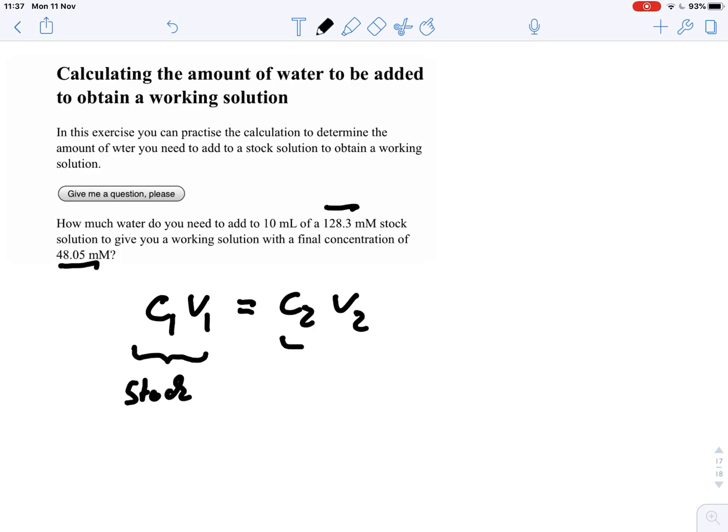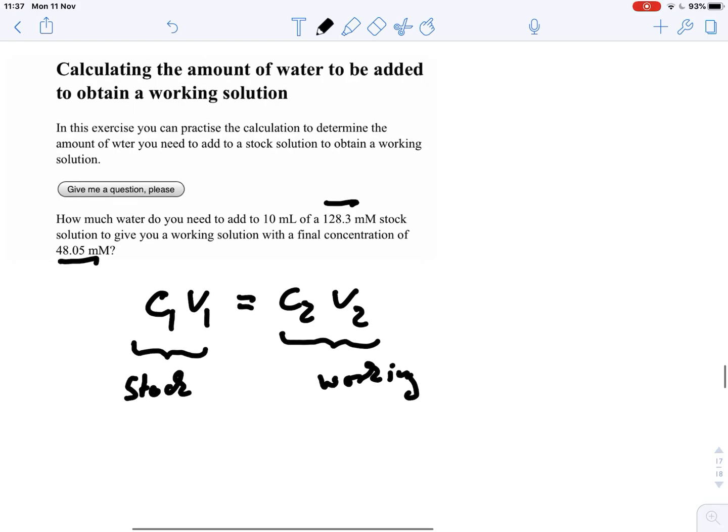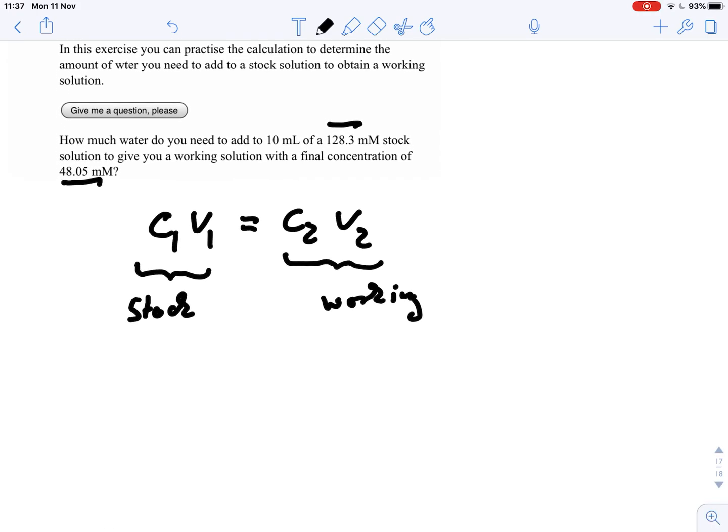And this one would be our working solution. And we have for our C1V1, we have 128.3 millimolar times 10 milliliter equals 48.05 millimolar.